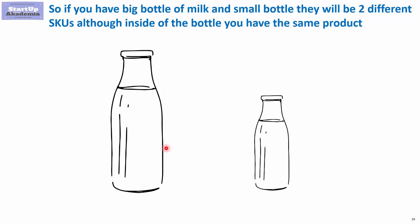Sometimes you can have a situation where the bottle has the same size, but for example there is a slightly different name on the bottle, or maybe the label is for a different market — again, this would be a different SKU. From a different perspective, if I had two small bottles but in one I had milk and in the other I had juice, they again would be two different SKUs. Production planning will actually be planning the production of a specific SKU and not only a product.